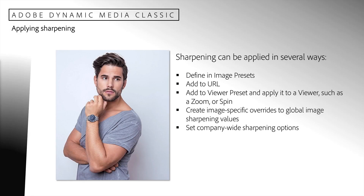Once you have determined the sharpening settings that work best, you will need to apply them to images. Dynamic Media Classic provides several ways to do this. You can add sharpening settings to image presets, add sharpening modifiers to the URL, or add them to a viewer preset and then apply them to a viewer such as a zoom or spin. You can also create image-specific overrides to the global image sharpening values, and define company-wide sharpening settings.